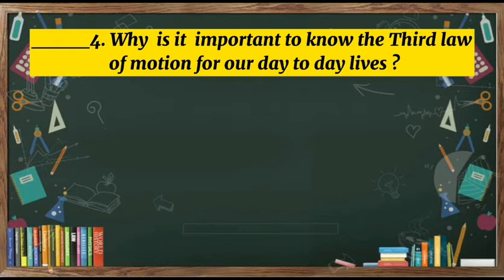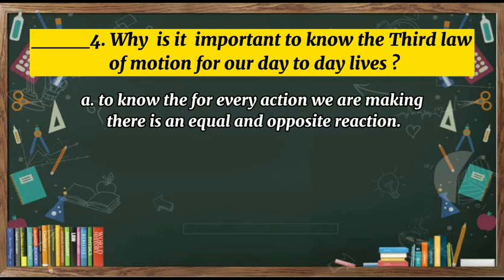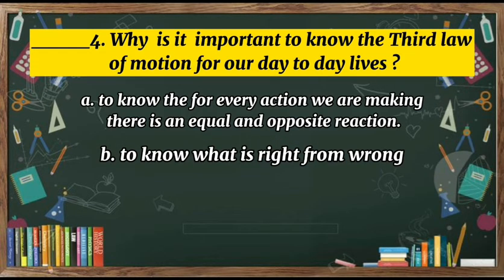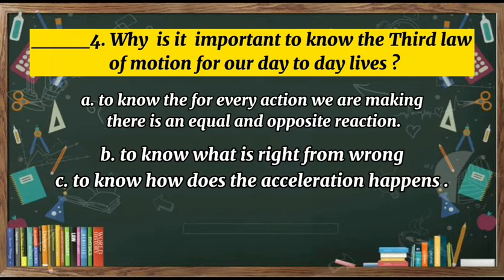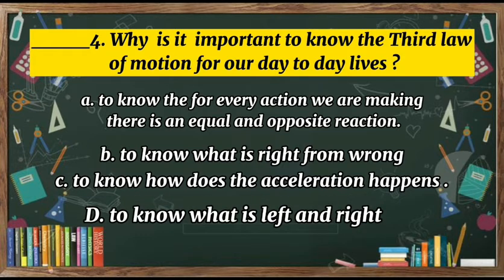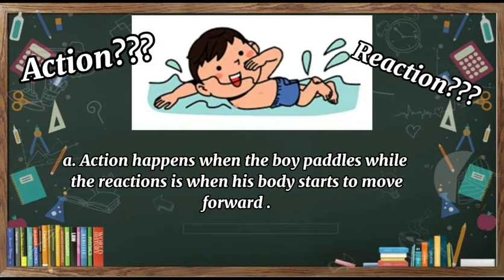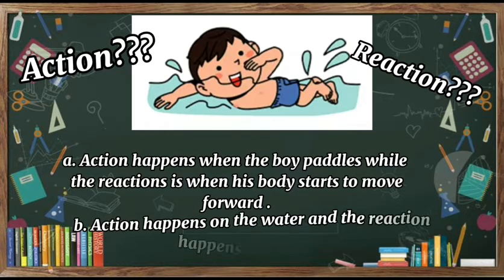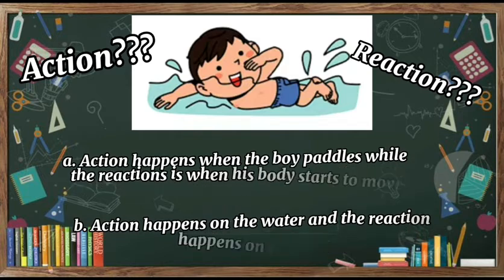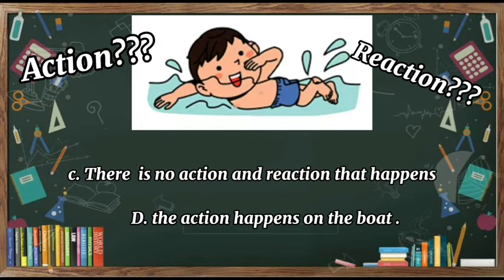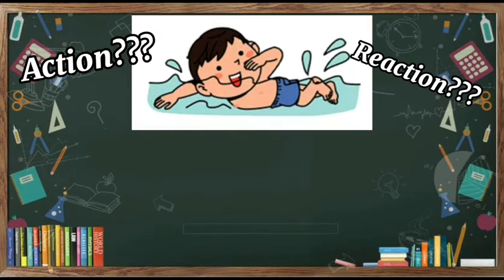Number four: Why is it important to know the third law of motion for our day-to-day lives? A. To know that for every action we are making, there is an equal and opposite reaction. B. To know what is right from wrong. C. To know how acceleration happens. D. To know what is left and right. Number five: The picture below is an example of the third law of motion. Locate where the action and reaction happen. A. Action happens when the boy paddles while reaction is when his body starts to move forward. B. Action happens on the water and the reaction happens on the boat. C. There is no action and reaction that happens. D. The action happens on the boat.